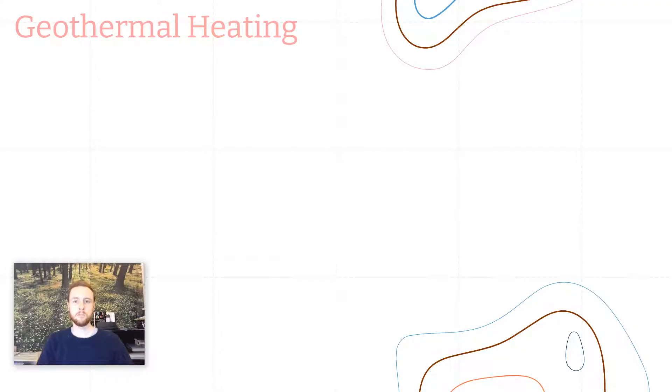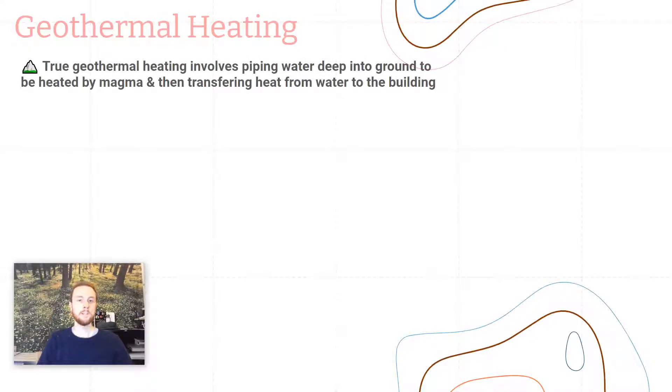Now, it is important to point out that we can do true geothermal heating, but it's vastly different than a ground source heat pump. In true geothermal heating, we're going to pipe water deep into the ground, where it's going to be heated by magma. Or we can access naturally occurring water reservoirs that are deep in the ground and that are heated by this magma. And then we'll pipe it back up to the surface and we'll transfer that heat from the water to the air of a building to provide heat. Again, different than a ground source heat pump.